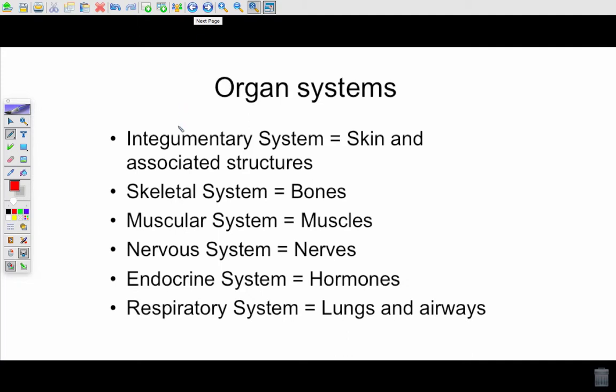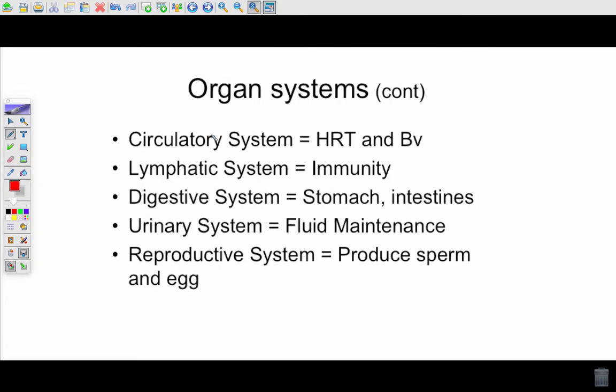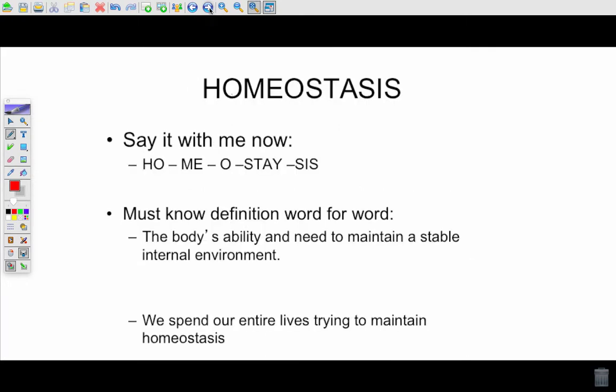Our organ systems. I'm just gonna let you go through this list, you can read it as well as I can. Something you've probably haven't heard of: integumentary system is your skin, endocrine system your hormones, lymphatic system is where we develop our immunity and fight off infections, the rest of them you probably should have heard of at some point. Homeostasis.